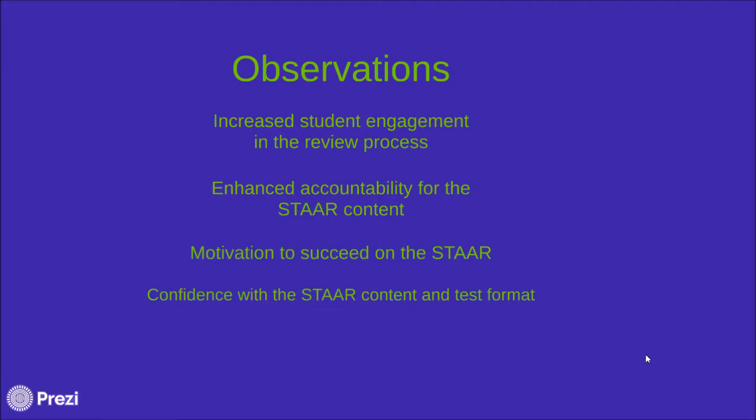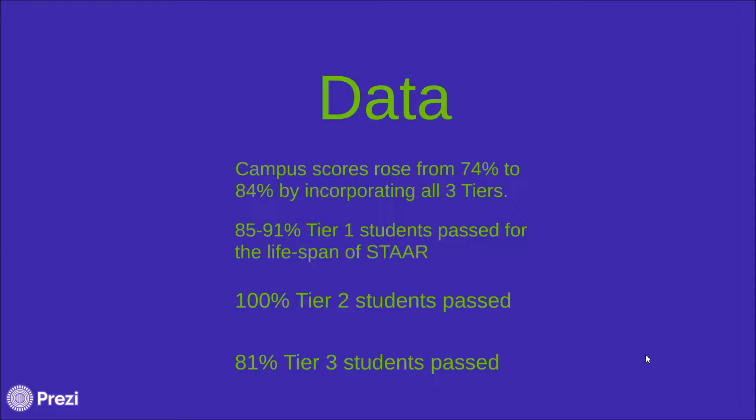Observations are great, but what about the numbers? I think the most significant thing we saw by enacting all three tiers is that in one year our scores rose 10 percent. We went from 74 percent passing to 84 percent passing. Other notable accomplishments: tier one was used for the entire lifespan of the STAR since 2012. During the five years of STAR testing, 85 to 91 percent of our tier one students passed. When we developed and incorporated tiers 2 and 3, 100 percent of our tier 2 students passed and 81 percent of our most at-need tier 3 students passed the STAR test.